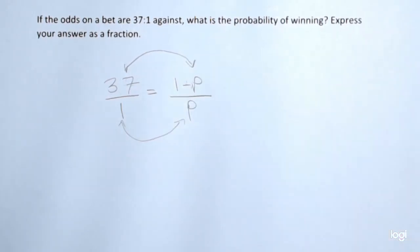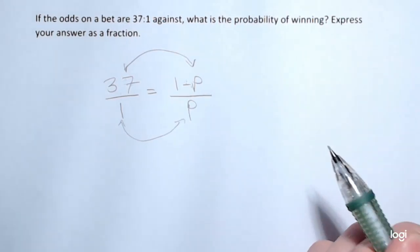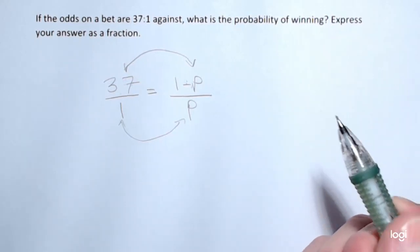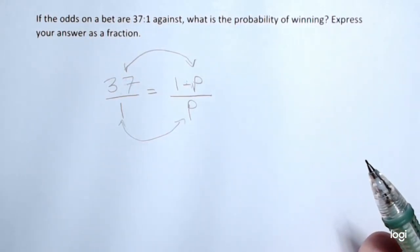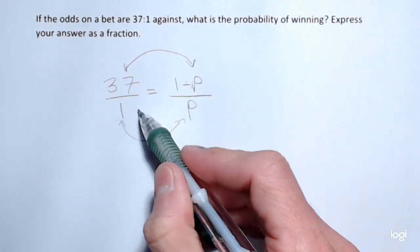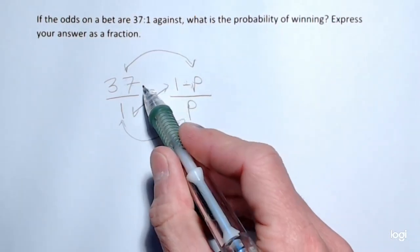When you solve this, you'll end up getting the expected value equation form out of this, but in my head, I think this is easier to see. Plus, you don't have to have that expected value formula memorized. So you might remember that when you have a fraction set equal to a fraction like this, you can just cross multiply.